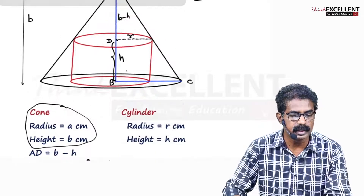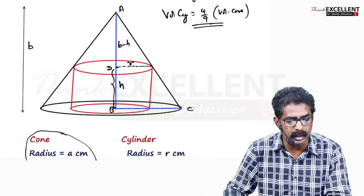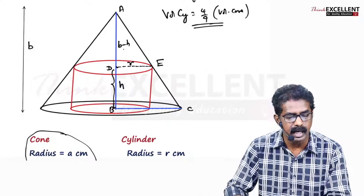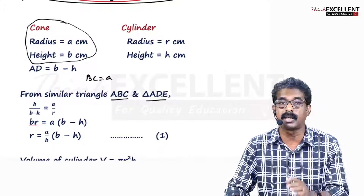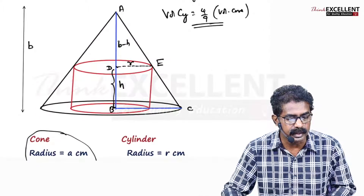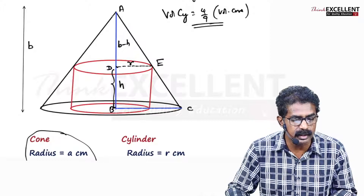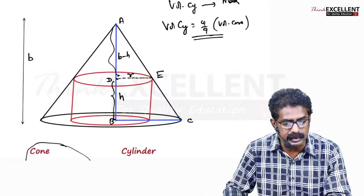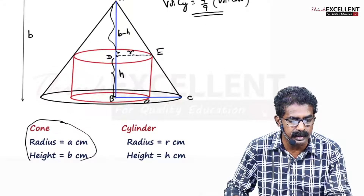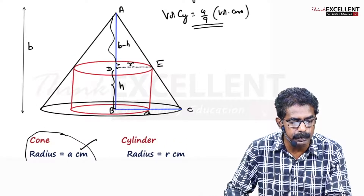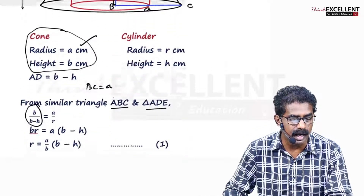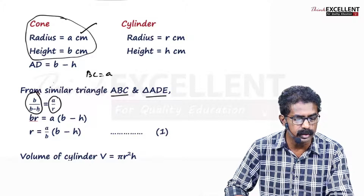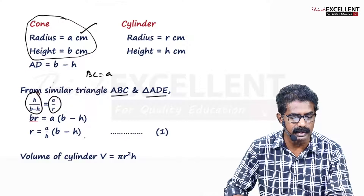We can see two similar triangles here. The big triangle is ABC and the smaller one is ADE. For similar triangles, corresponding sides are proportional. For the big triangle the height is AB = B, and for the small triangle the height is B minus H. The base BC = A for the big triangle and BE = R for the small triangle. So B by (B minus H) equals A by R. Cross-multiplying, BR = A(B minus H), giving R = (A/B)(B minus H).